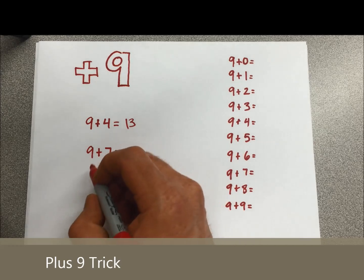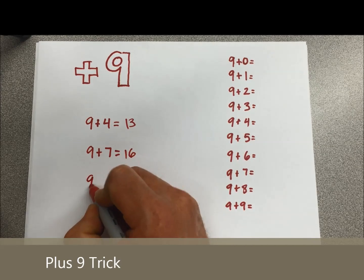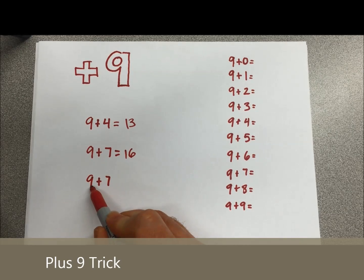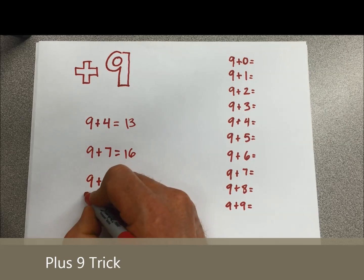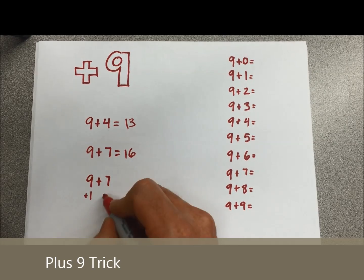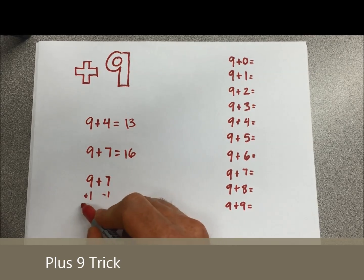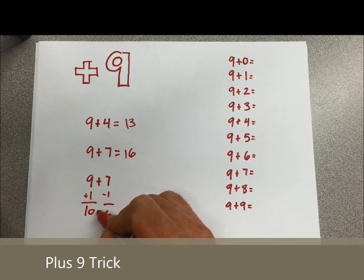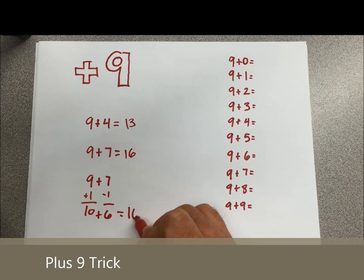Let me show you why this works. 9 plus 7, if we want to make the 9 into a 10, we need one more. So we take away 1 from the 7, that makes 9 plus 1 equals 10, 7 minus 1 equals 6, 10 plus 6 equals 16.